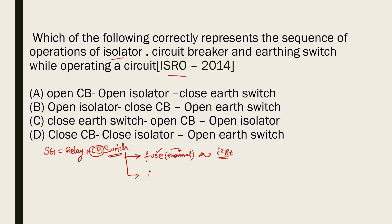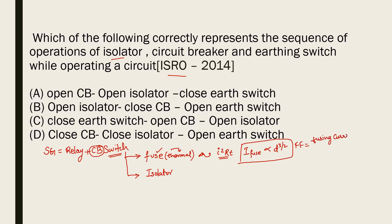Another type of switch is the isolator. The fusing current — the current at which the fuse blows off — is directly proportional to the physical dimension, i.e., diameter to the power of 3/2. There is also a quantity called the fusing factor, where fusing factor = fusing current ÷ fuse rated current. Fusing current is the current at which the fuse melts, while fuse rated current is the maximum current the fuse can carry without melting.